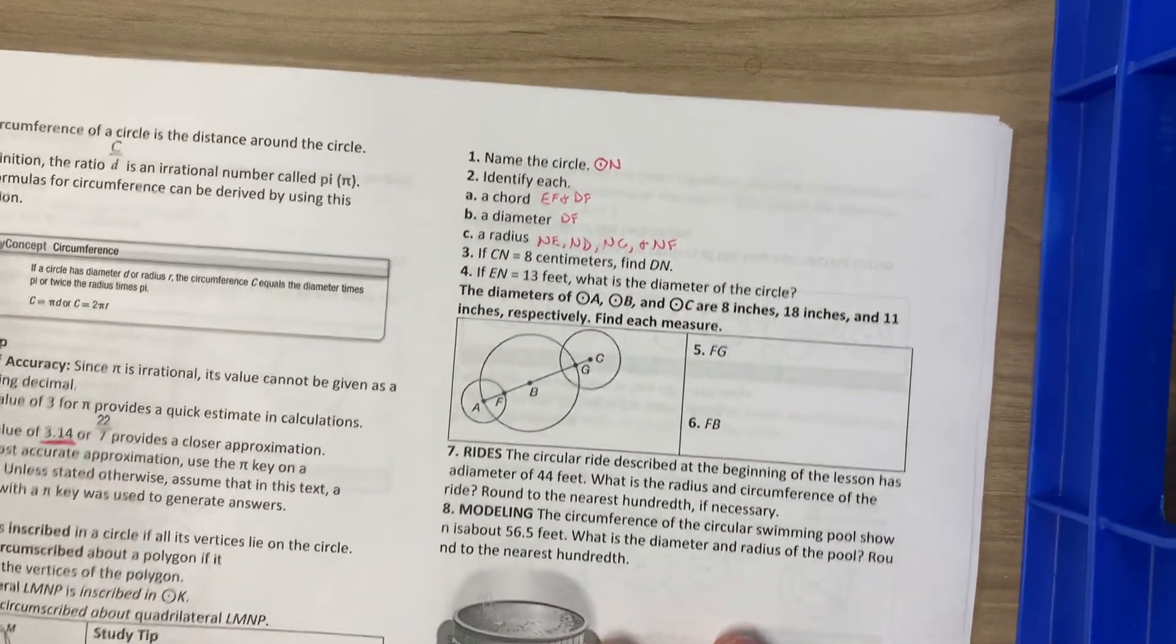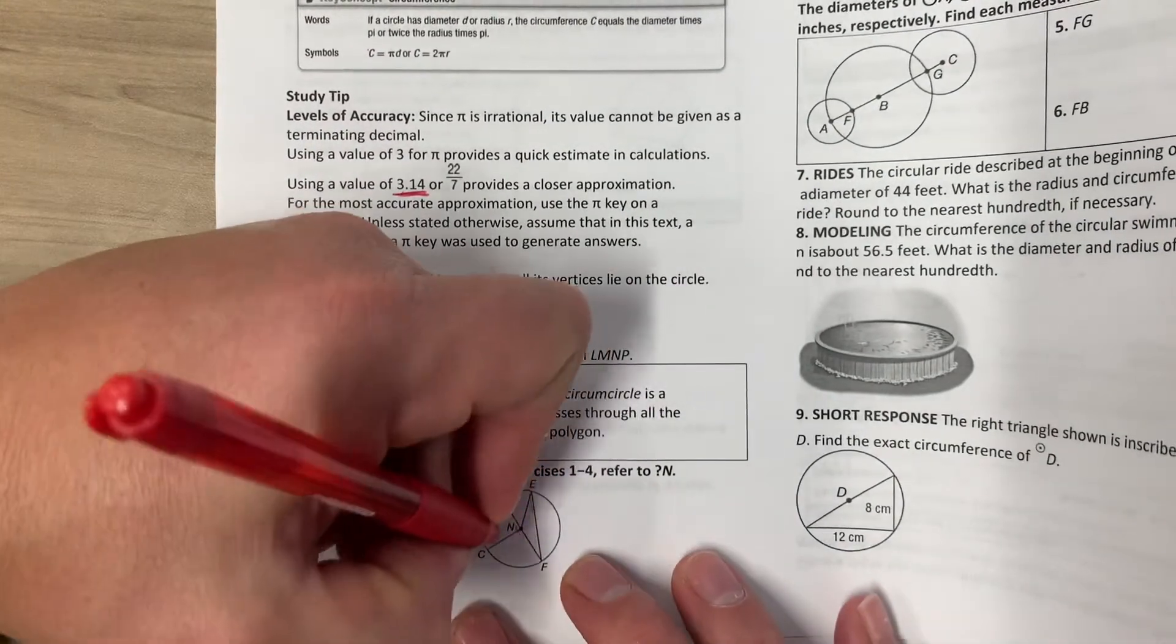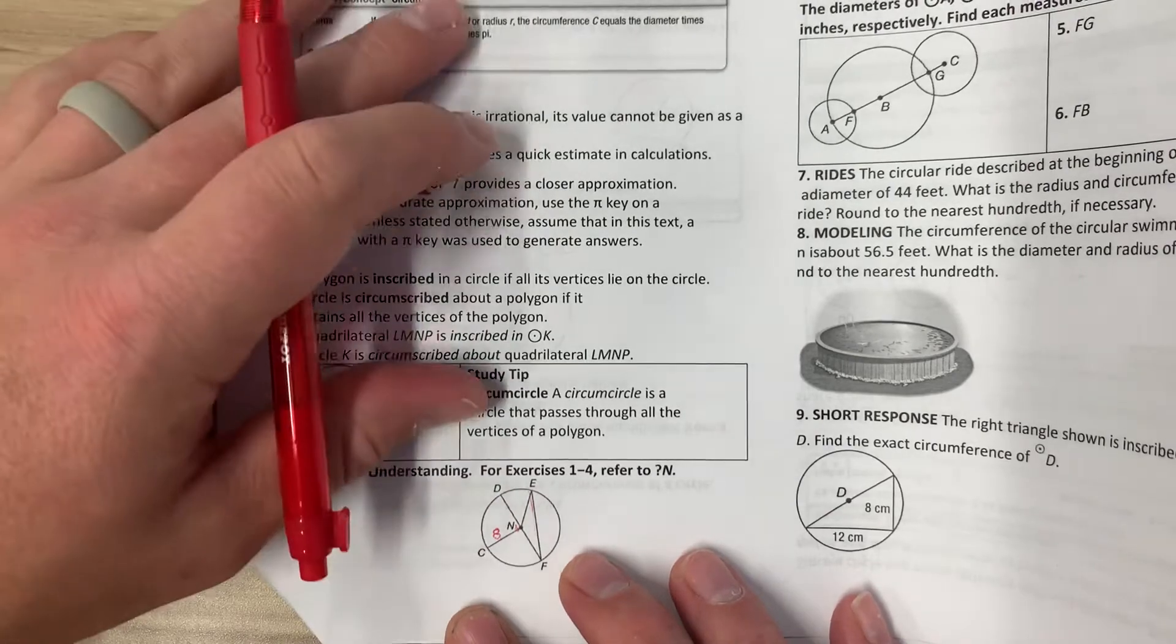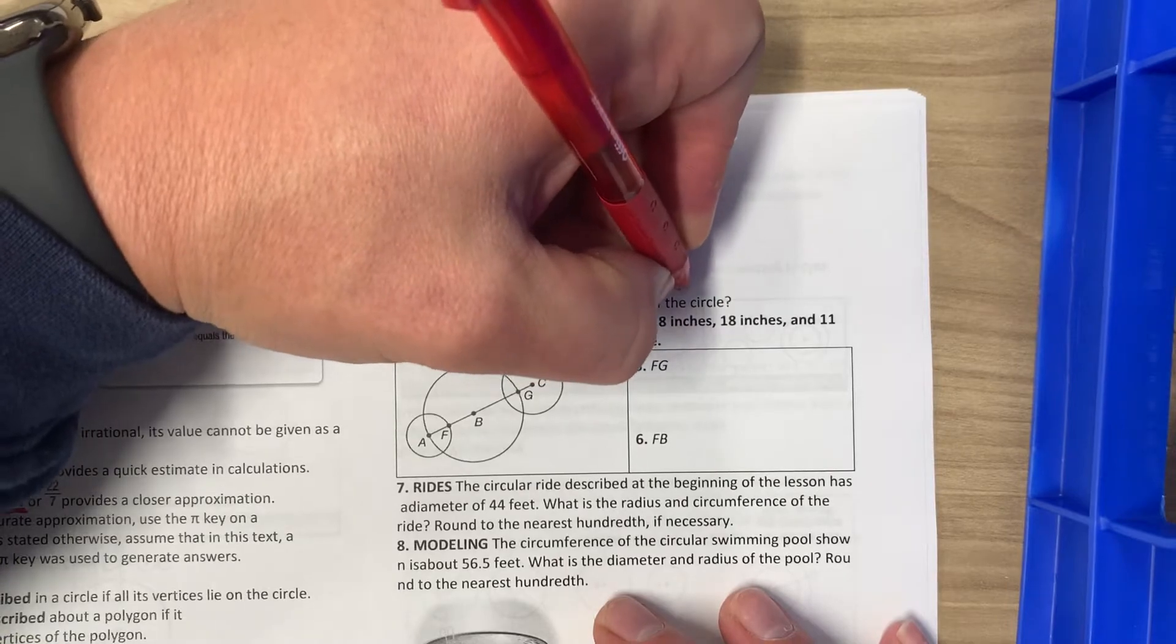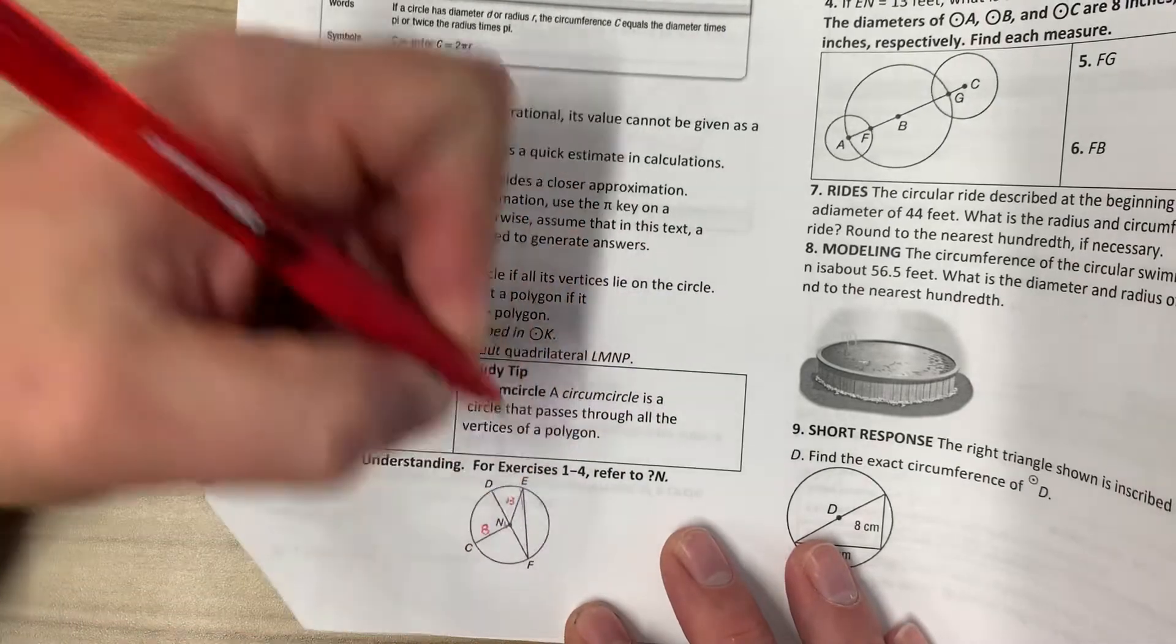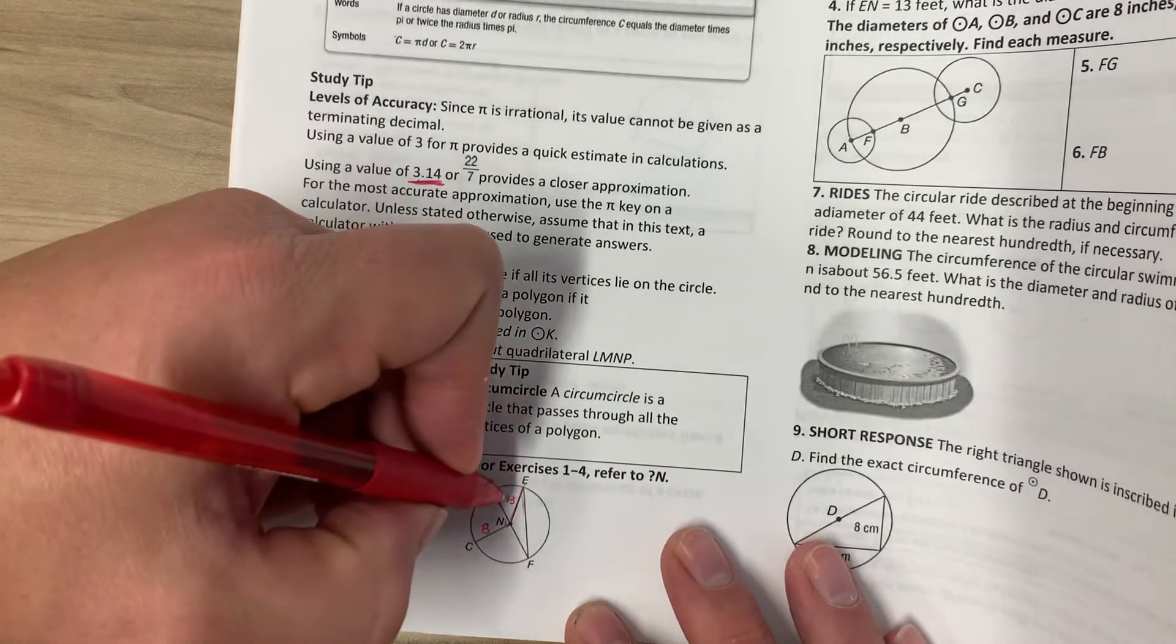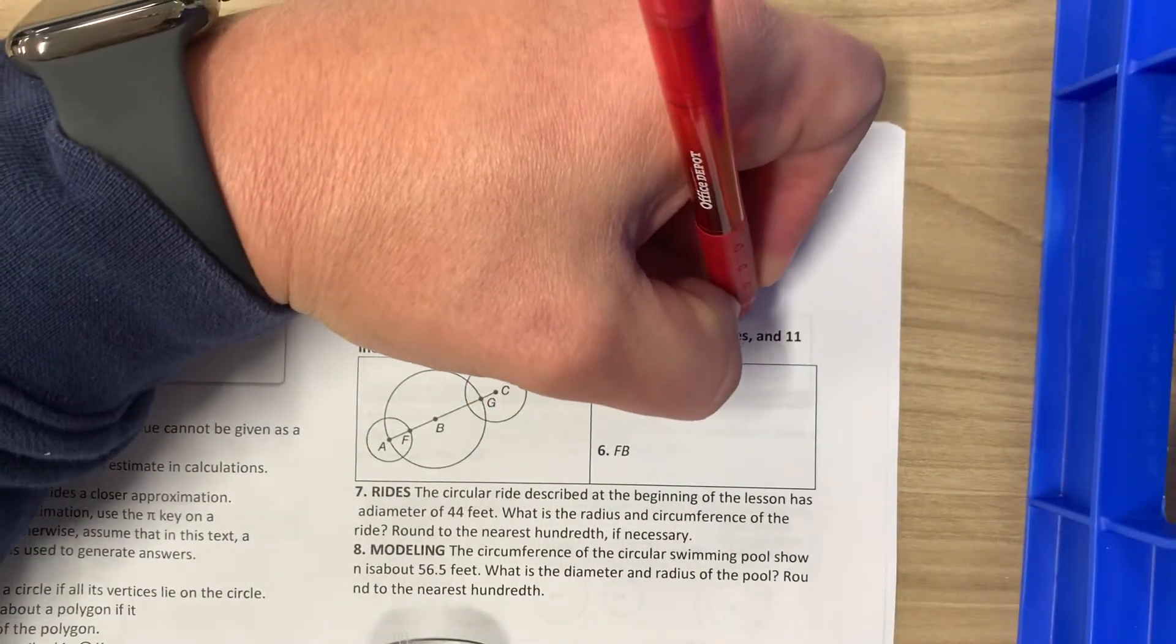If CN is 8 centimeters, find DN. Since these are both radii, DN and CN are radii, we know they're going to be congruent. DN will equal 8 centimeters. If EN is 13, what is the diameter of the circle? The radius is half as much as the diameter. If we multiply this 13 by 2, which is 26, the diameter is 26 centimeters.